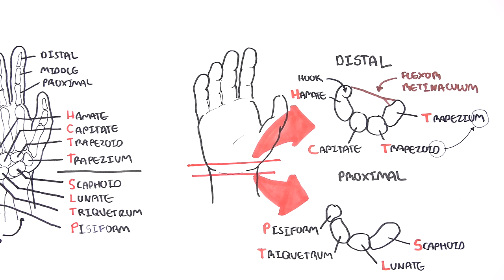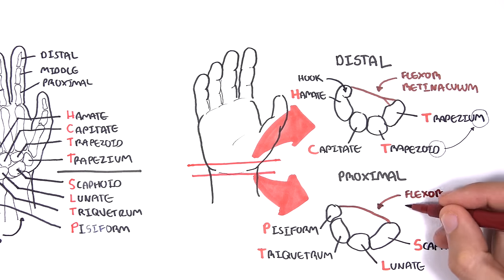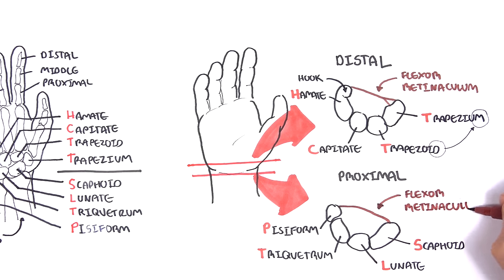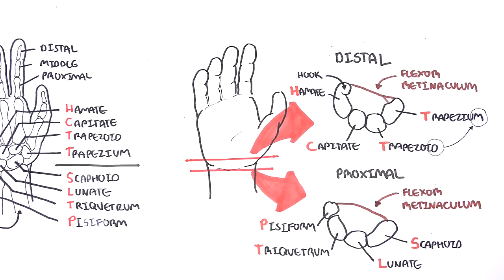The scaphoid has a tubercle that can be felt. And here again is the flexor retinaculum. The flexor retinaculum is an important part of the wrist anatomy because things run over it and things run under it.